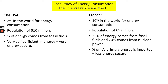France is 10th in the world for energy consumption with a population of 65 million, so it's a smaller nation with less energy consumption. 25% of France's energy comes from fossil fuels and 70% from nuclear power — nearly the direct opposite of the USA, where 75% of energy comes from fossil fuels. Half of all of France's primary energy is imported, making it less energy secure, as it relies on other nations to supply those primary energy sources.